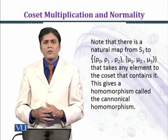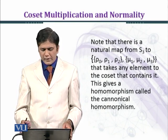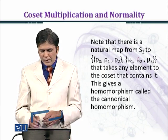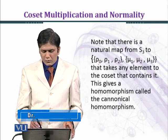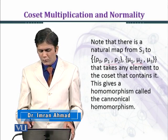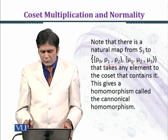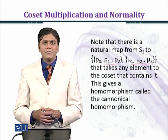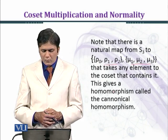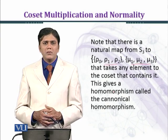Before going to the theorem, let's consider an important fact. Note that there is a natural map from S3 to the set {rho0, rho1, rho2} — the identity coset — and {mu1, mu2, mu3}, that takes any element to the coset that contains it. This gives a homomorphism called the canonical homomorphism.